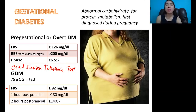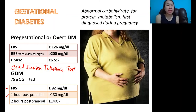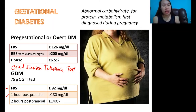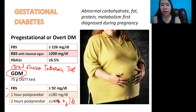After the fasting blood sugar is taken, the mother drinks a sweet juice with 75 grams of glucose. After 1 hour, we check the 1-hour post-prandial blood sugar. If it is greater than or equal to 180 mg per deciliter, the mother is considered diabetic. Next is the 2-hour post-prandial: 2 hours after drinking the juice, if the blood sugar is greater than or equal to 140 mg per deciliter, the mother is considered to have gestational diabetes mellitus.